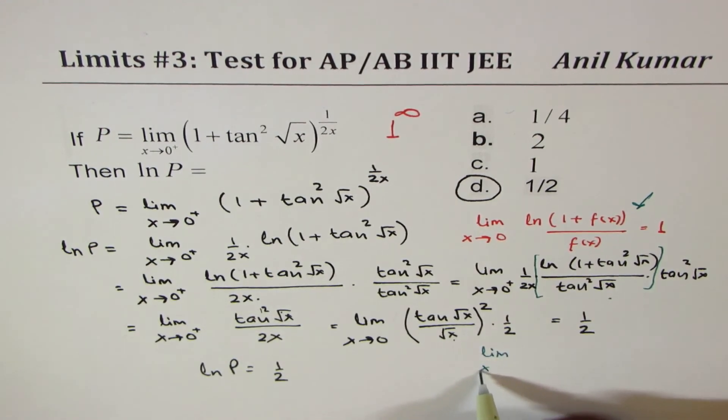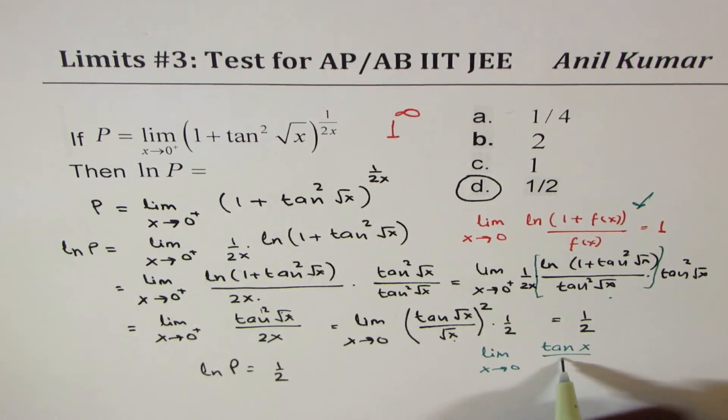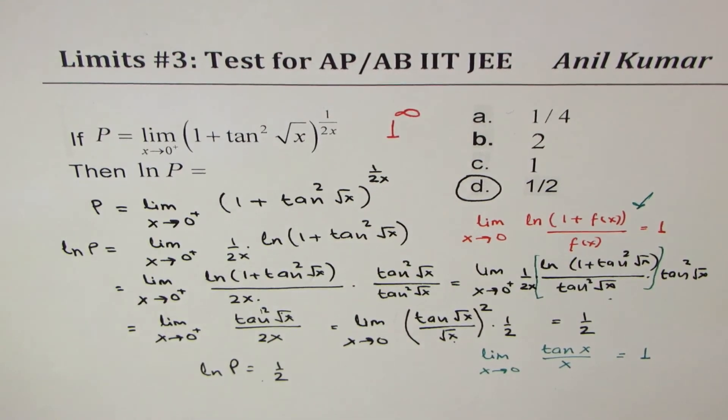at this stage, we use limit x approaches 0 for tan(x)/x. This is also equal to 1. So that helped us to get the answer.